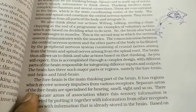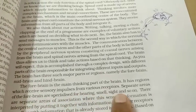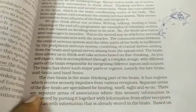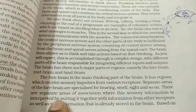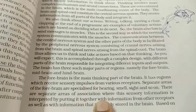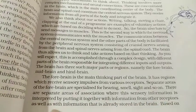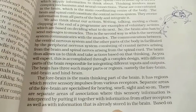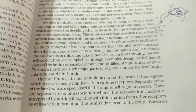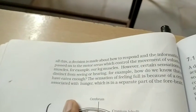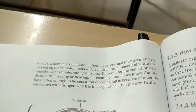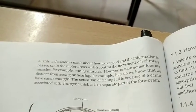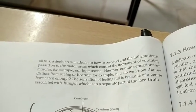Separate areas of the forebrain are specialized for hearing, smell, sight, and so on. There are separate areas of association where sensory information is interpreted by putting it together with information from other receptors, as well as information already stored in the brain. Based on all this, a decision is made about how to respond, and information is passed on to the motor area which controls the movement of voluntary muscles.